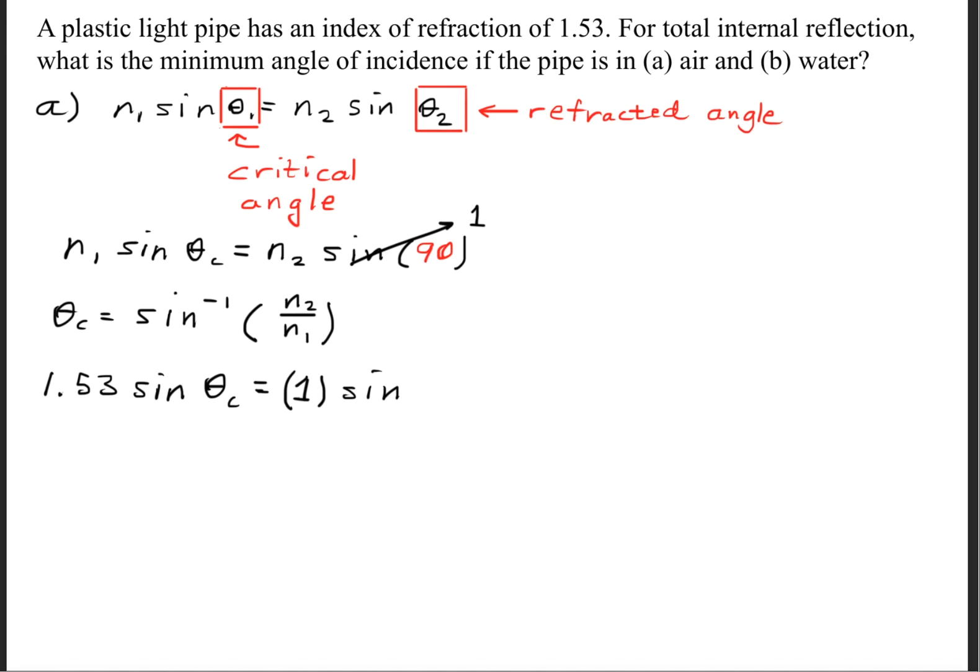Solving part A, we're given that the first index of refraction is 1.53, and for air, it's simply 1. We'll use 1 to make the calculations easy. Remember that the refracted angle will be 90 degrees.